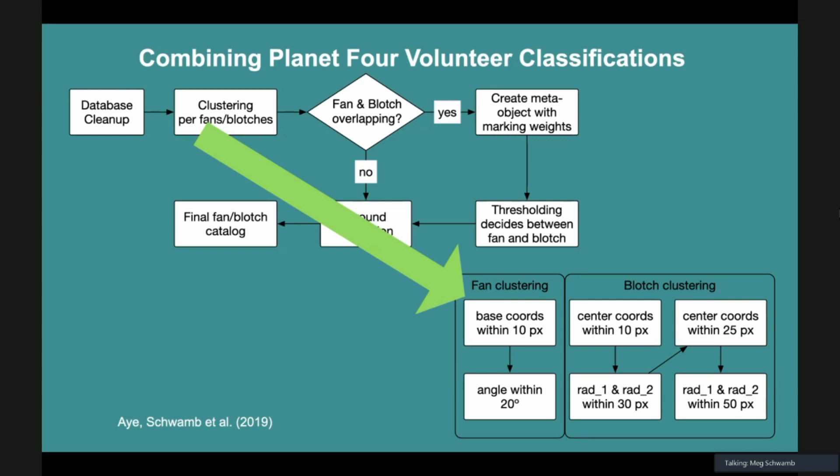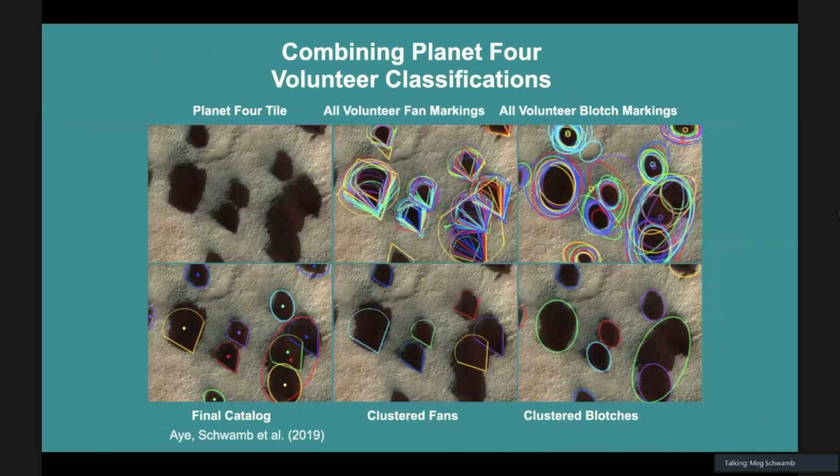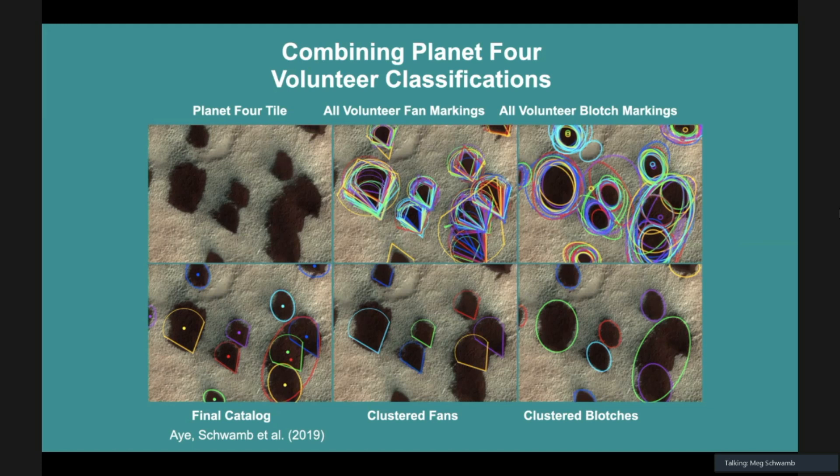We've gone through and used this pipeline and been able to take all of our classifications, use that wisdom of crowd effect, and actually create a catalog of these seasonal fans and blotches. It's the largest that's ever been produced for looking at Mars and these features.